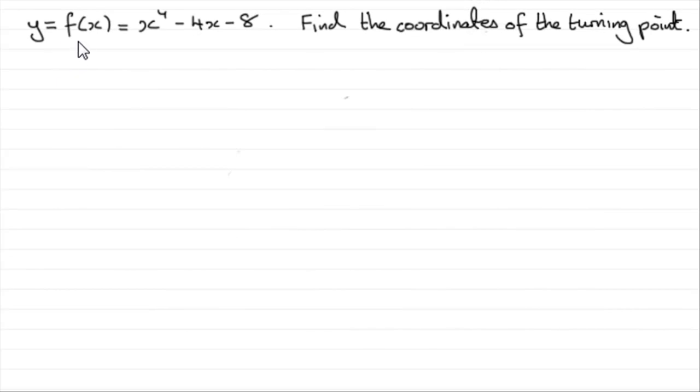Now in this part we're told that y equals f of x, so y equals x to the power of 4 minus 4x minus 8. We're asked to find the coordinates of the turning point. I do stress it says turning point, so we know we are going to expect one answer here.